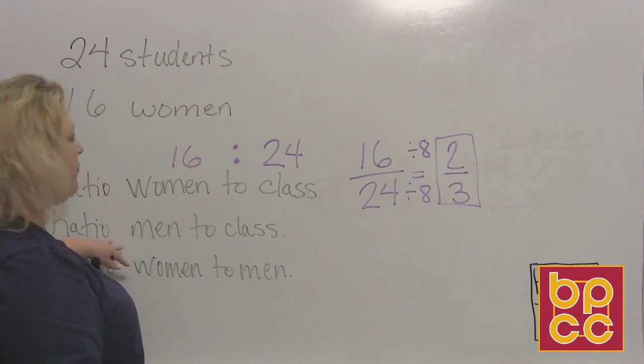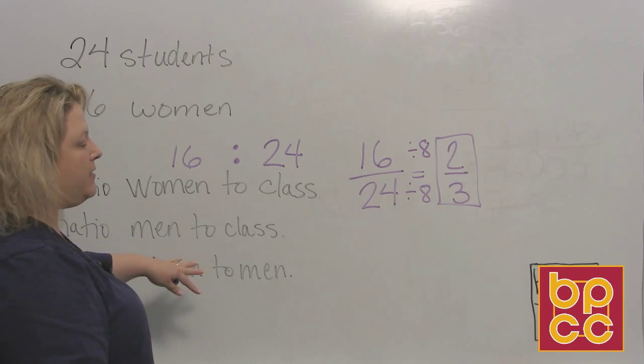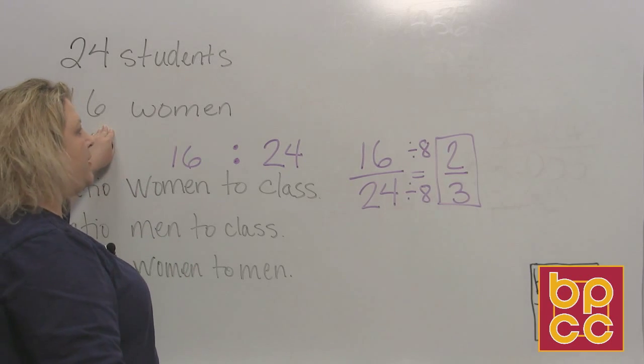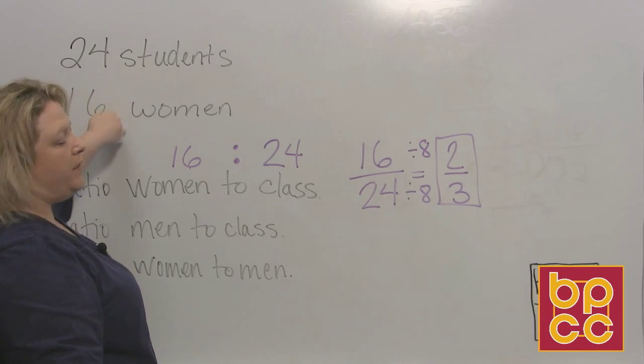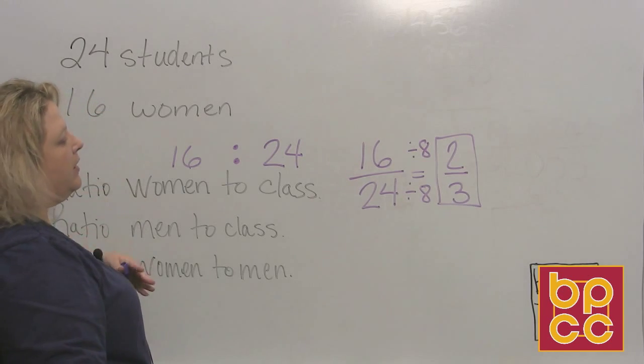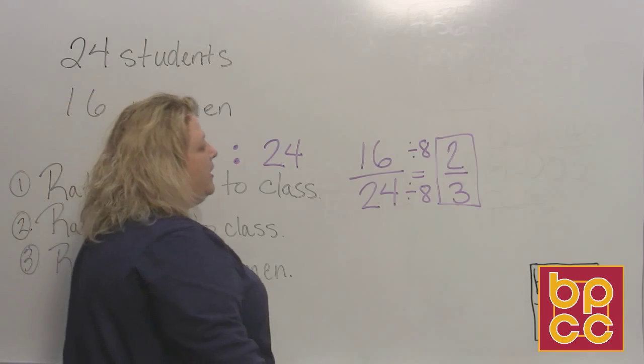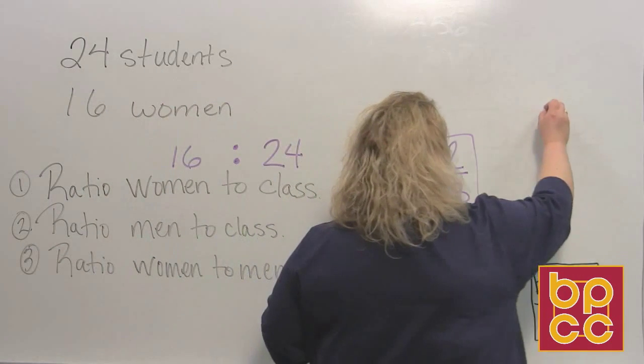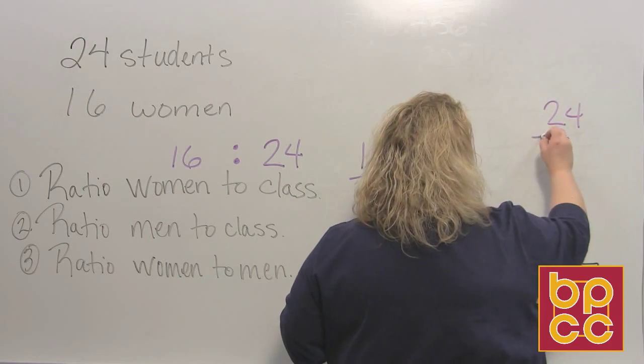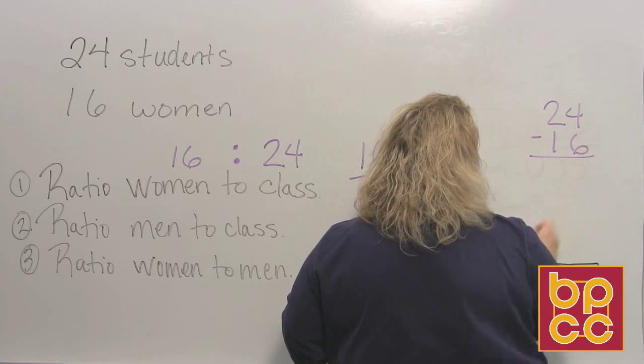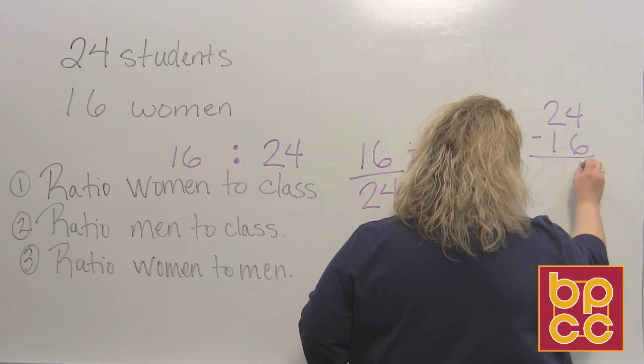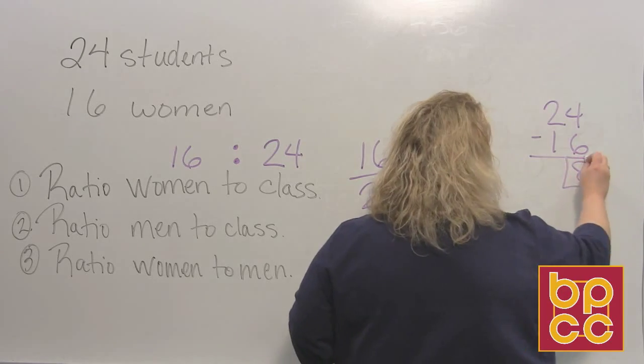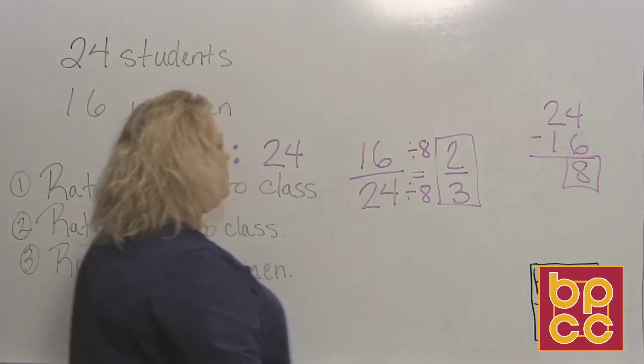And then we have another one, the ratio of men to the class. Well it doesn't say how many men there are, but you can assume that if there's 24 people in the class and there are 16 women, if you do the subtraction, 24 take away 16, what does that leave me? Well 14 minus 6 is 8. That leaves me 8 men that must be in the class.